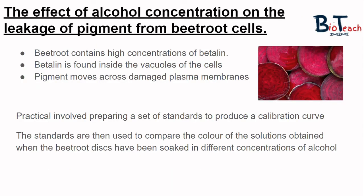This video is based on the experiment conducted with students, which is usually looking at the effect of alcohol concentration on the leakage of pigment from beetroot cells. We look at beetroot because it contains high concentrations of a pigment called betalin. Betalin is found inside the vacuoles of the cells of the beetroot, and the pigment only moves across damaged plasma membranes. The more the damage, the more pigment we would expect to see.